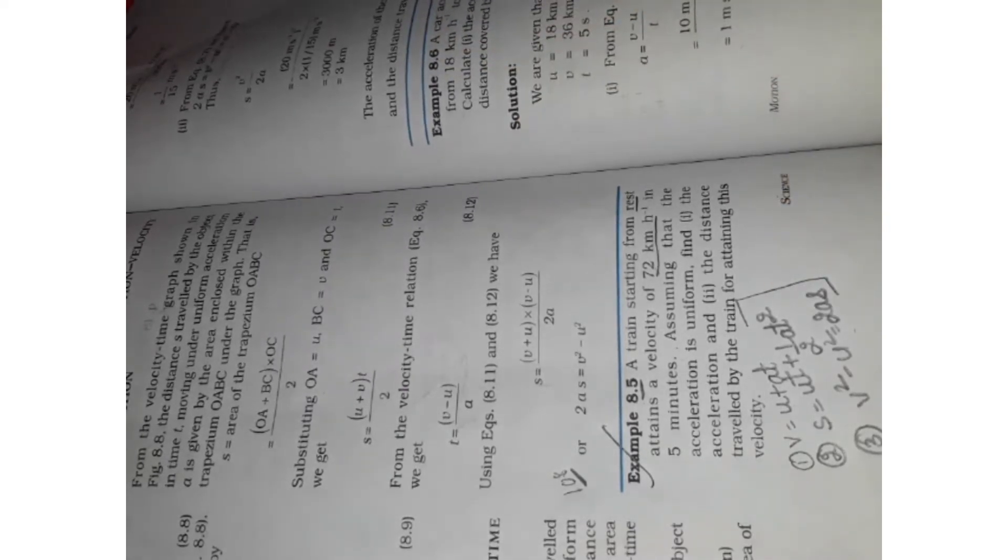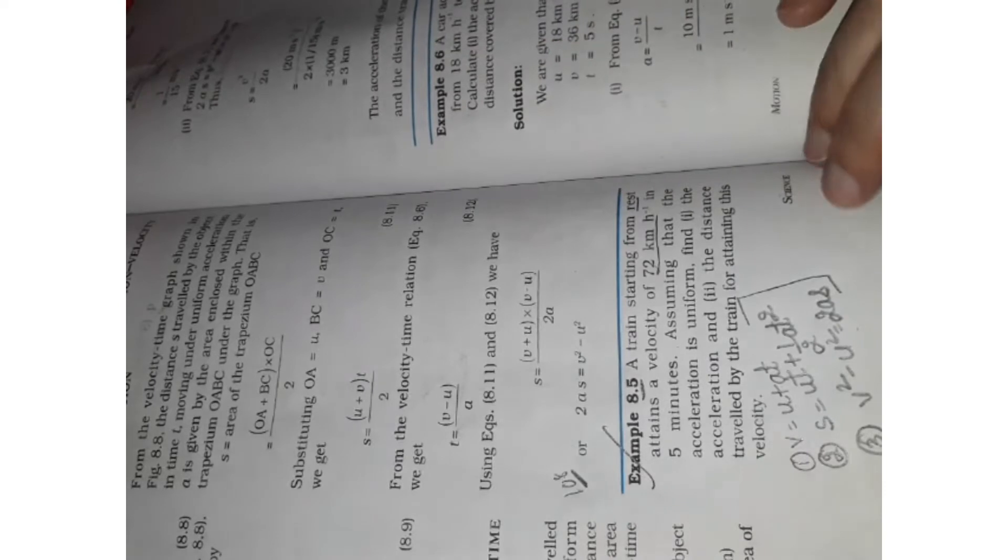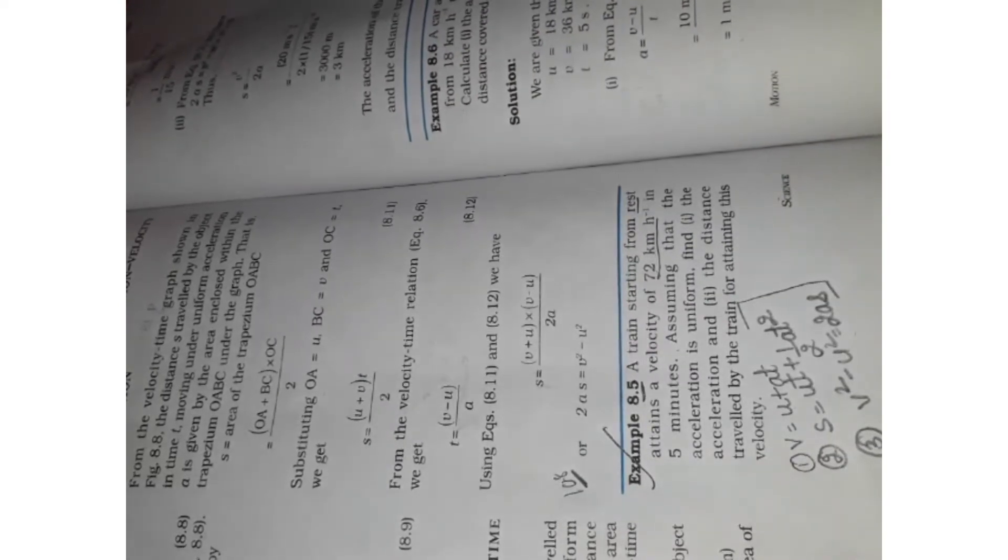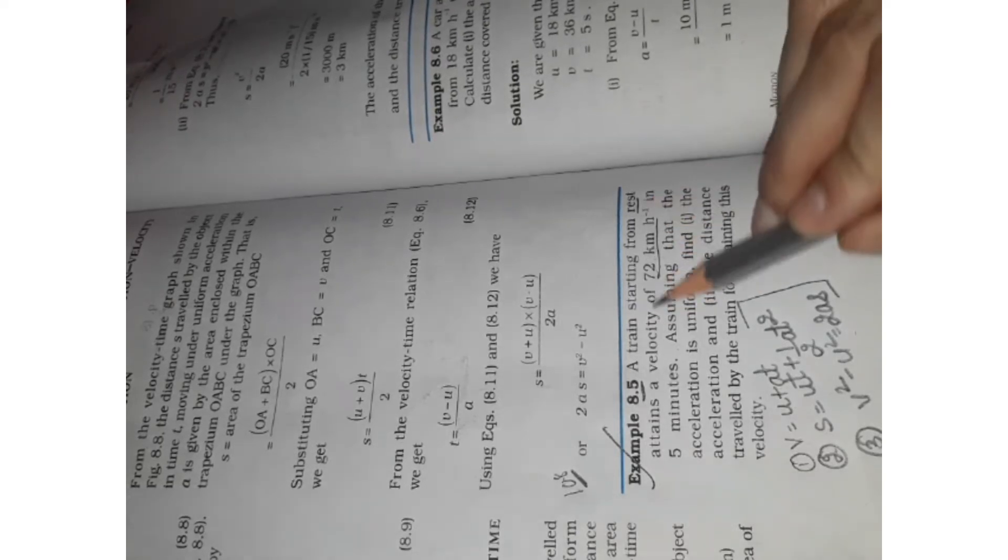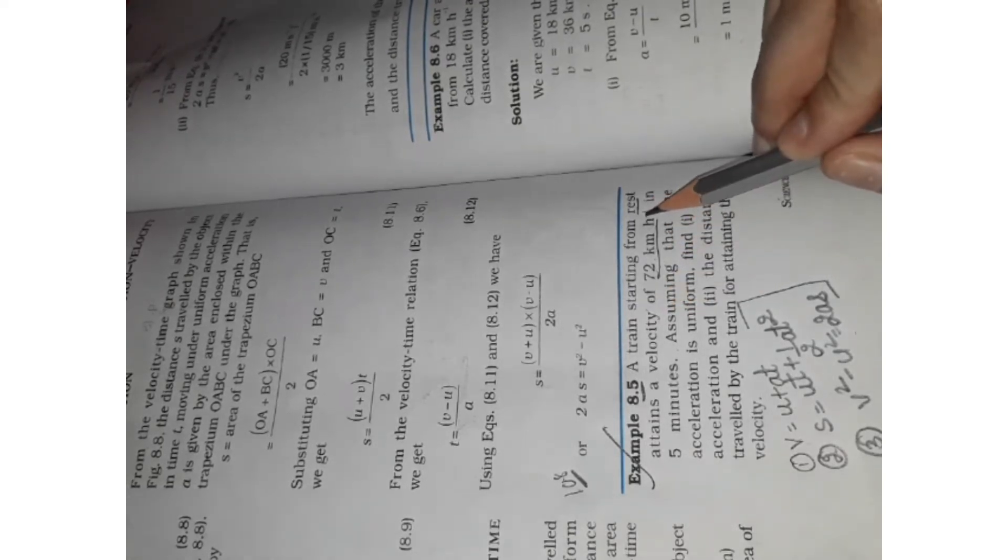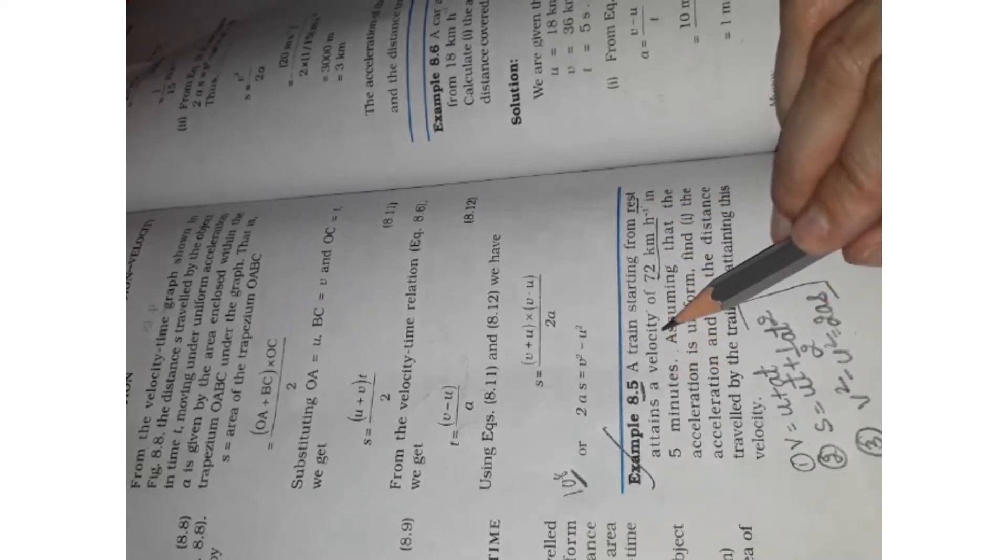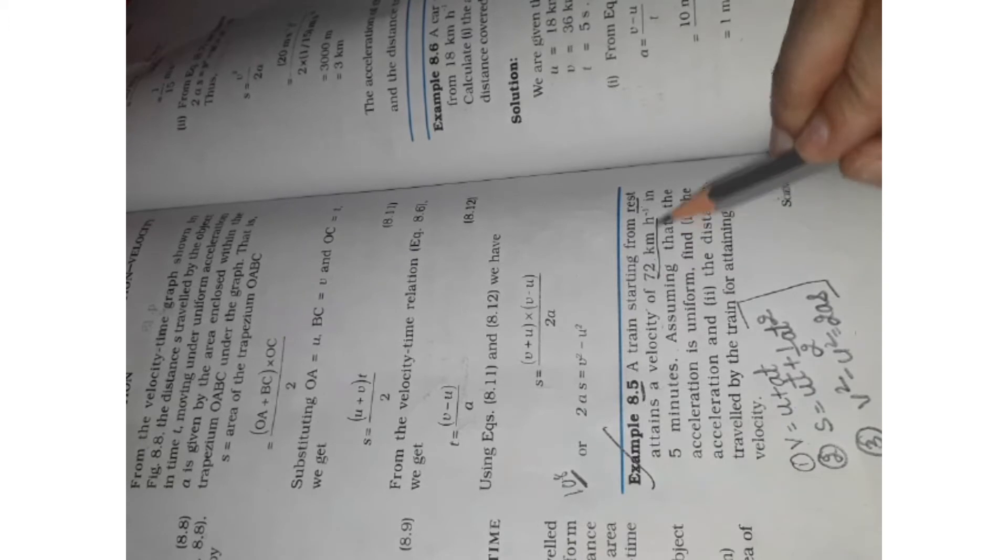Because the chapter on motion are numerical. First of all, we will solve the problem in the book. A train starting from rest. A train was starting from rest and attains a velocity of 72 km per hour. How many minutes? 5 minutes.